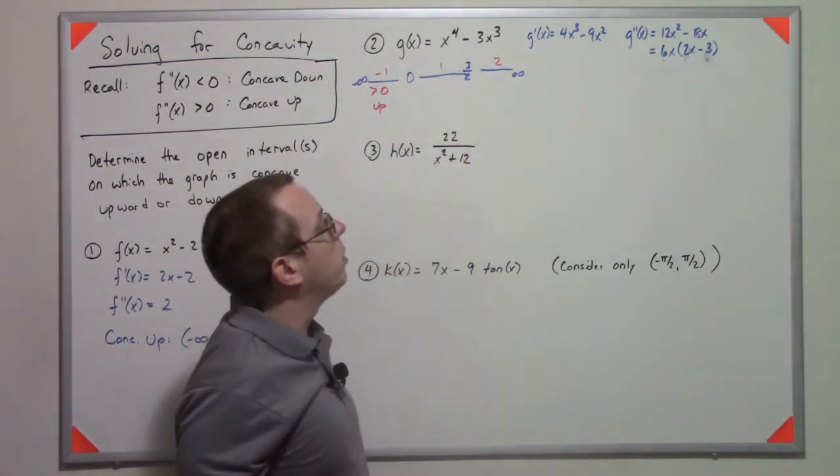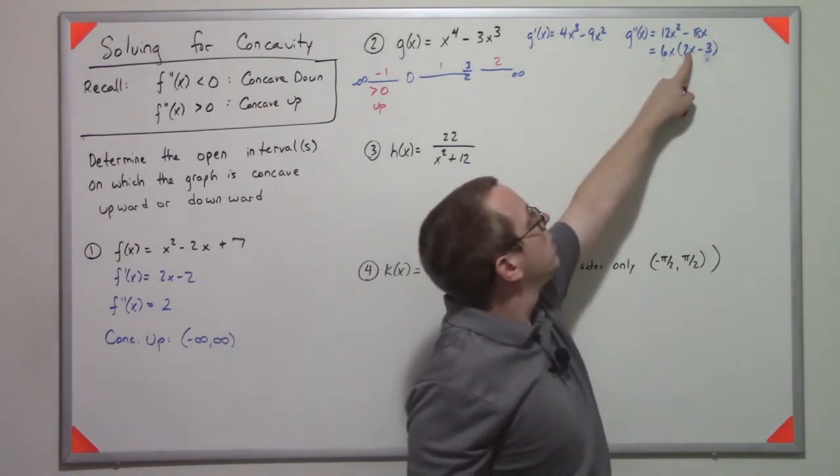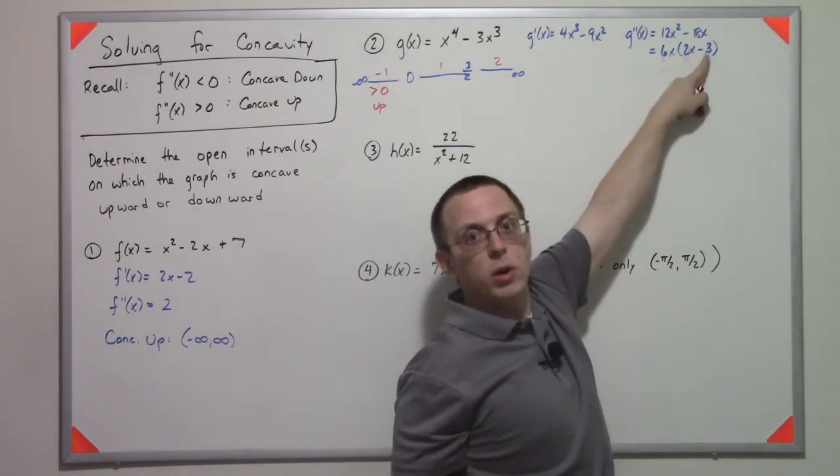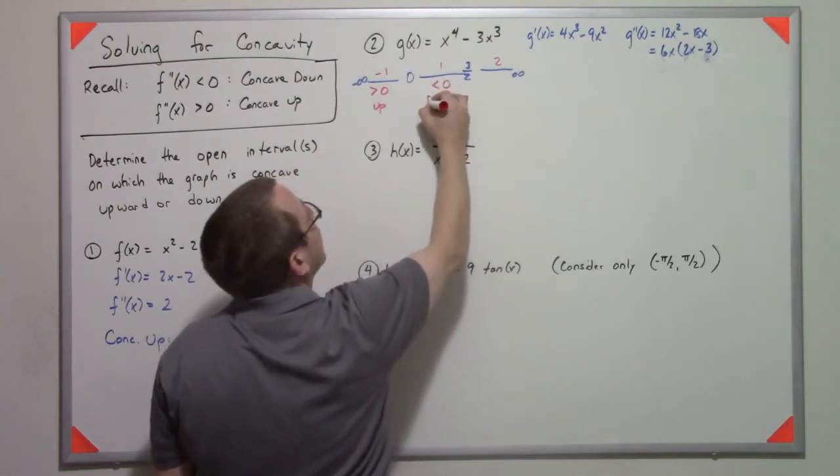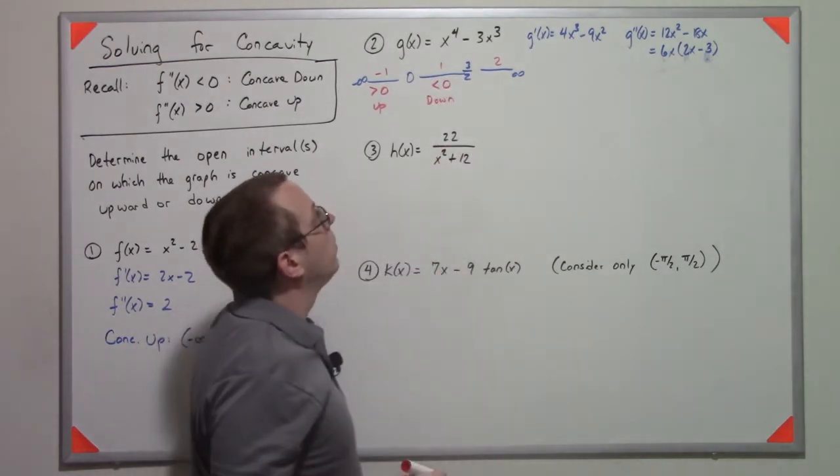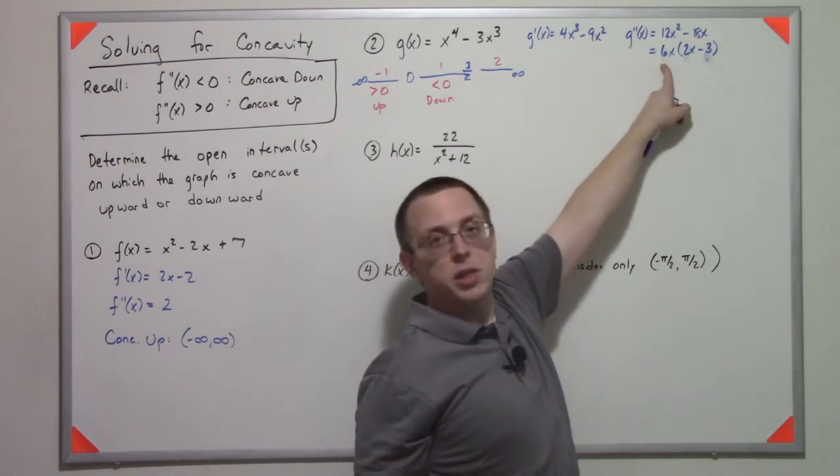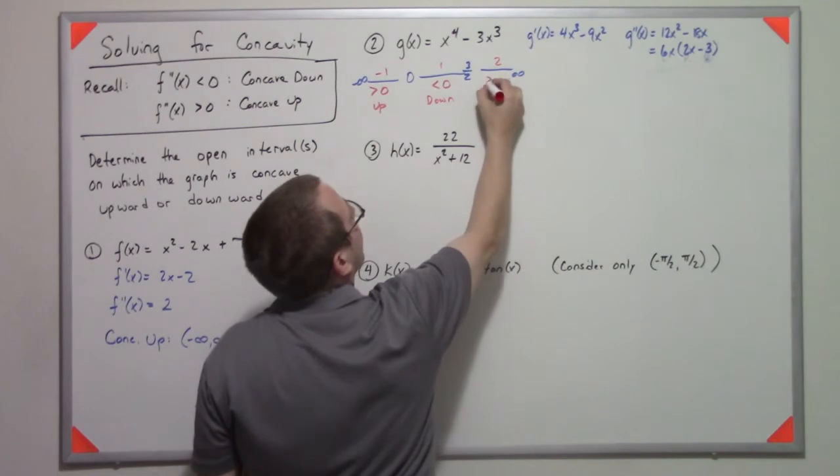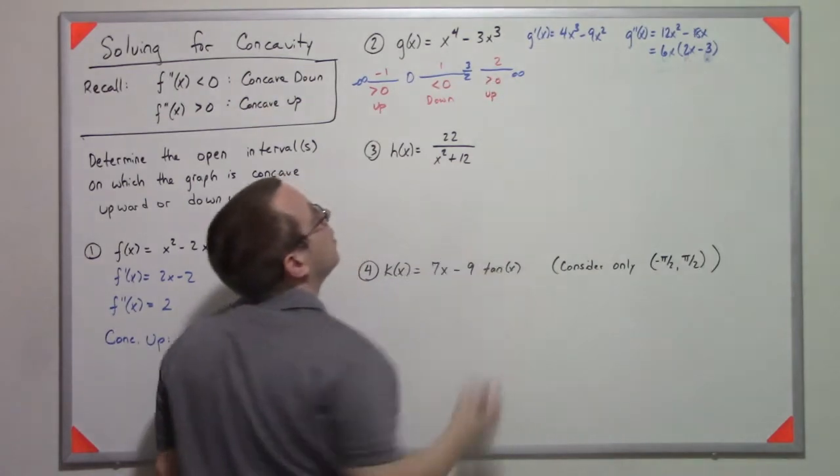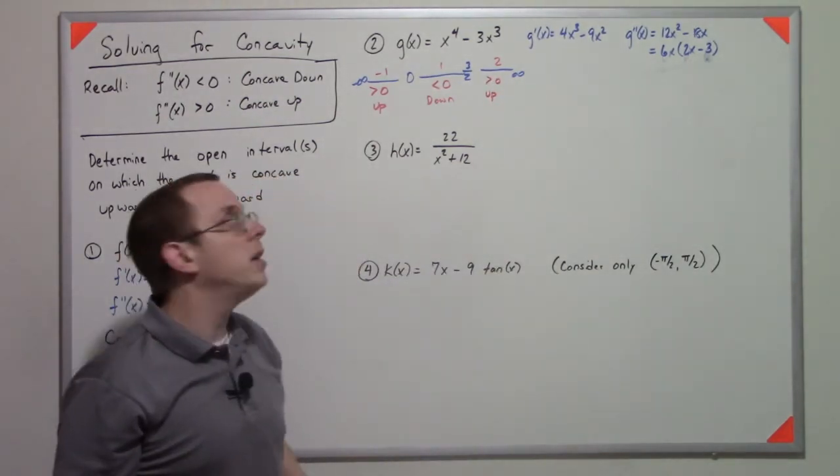Now if I plug in 1, I get positive 6. 2 minus 3 is negative 1, so this is negative 6. It's down. If I plug 2, I get a positive 12. 4 minus 3 is 1. So I get a positive 12 overall. So it's concave up.